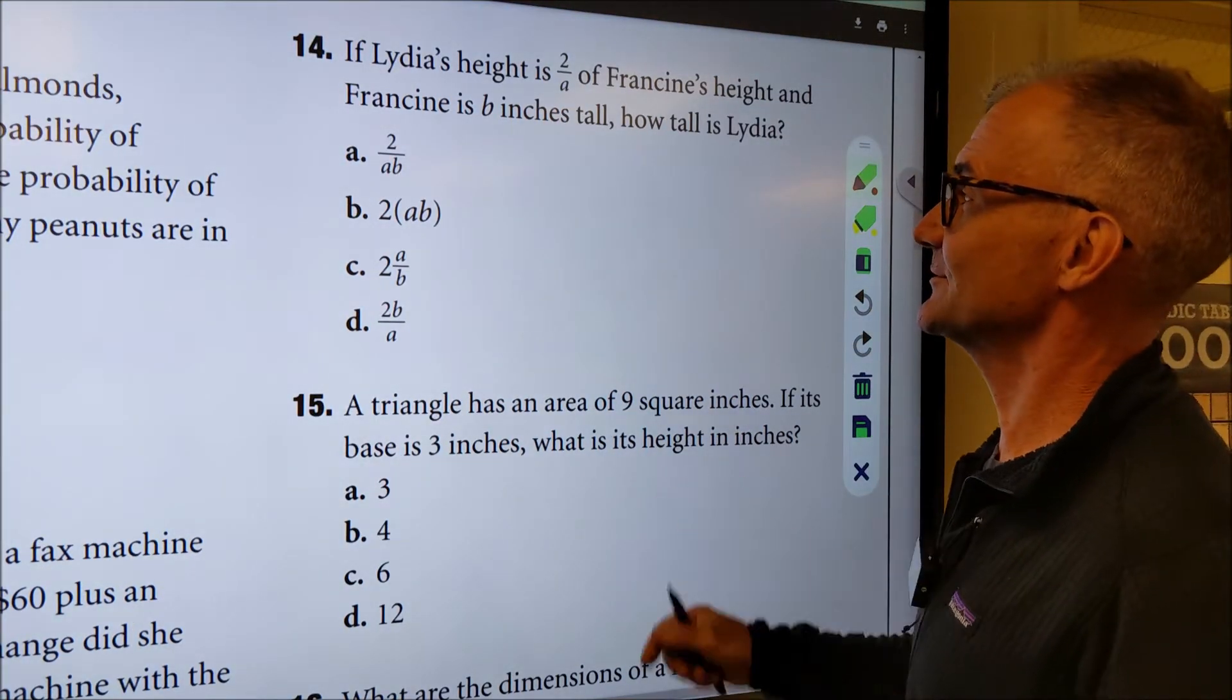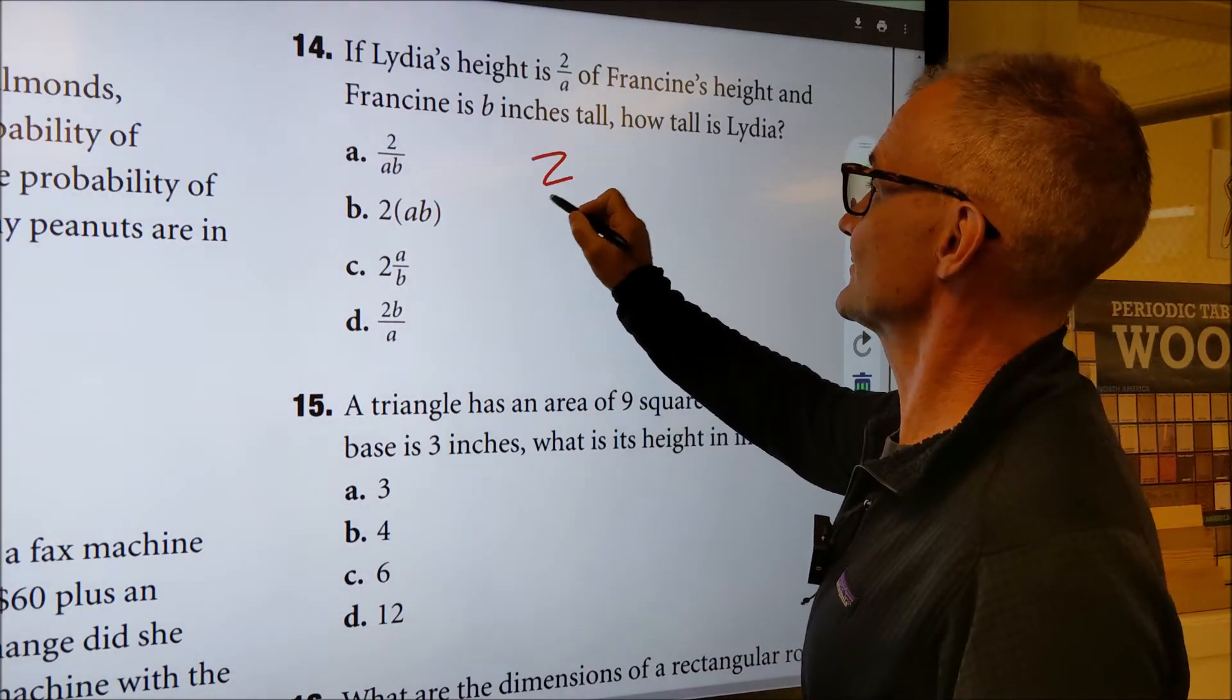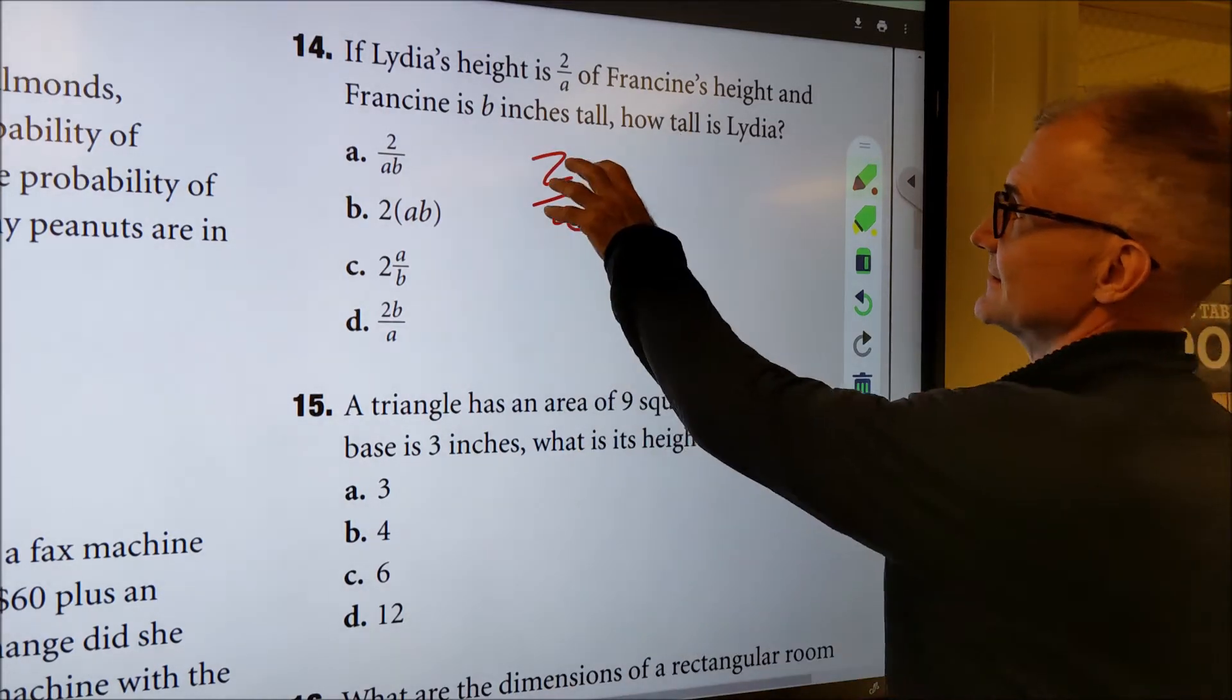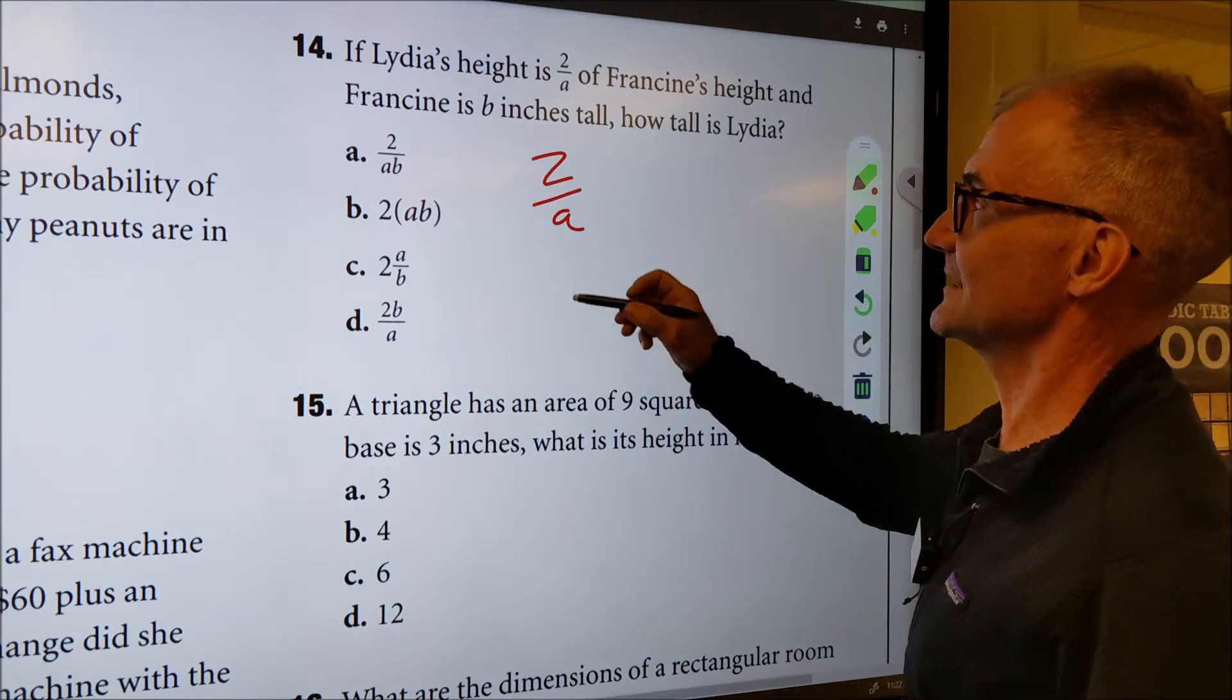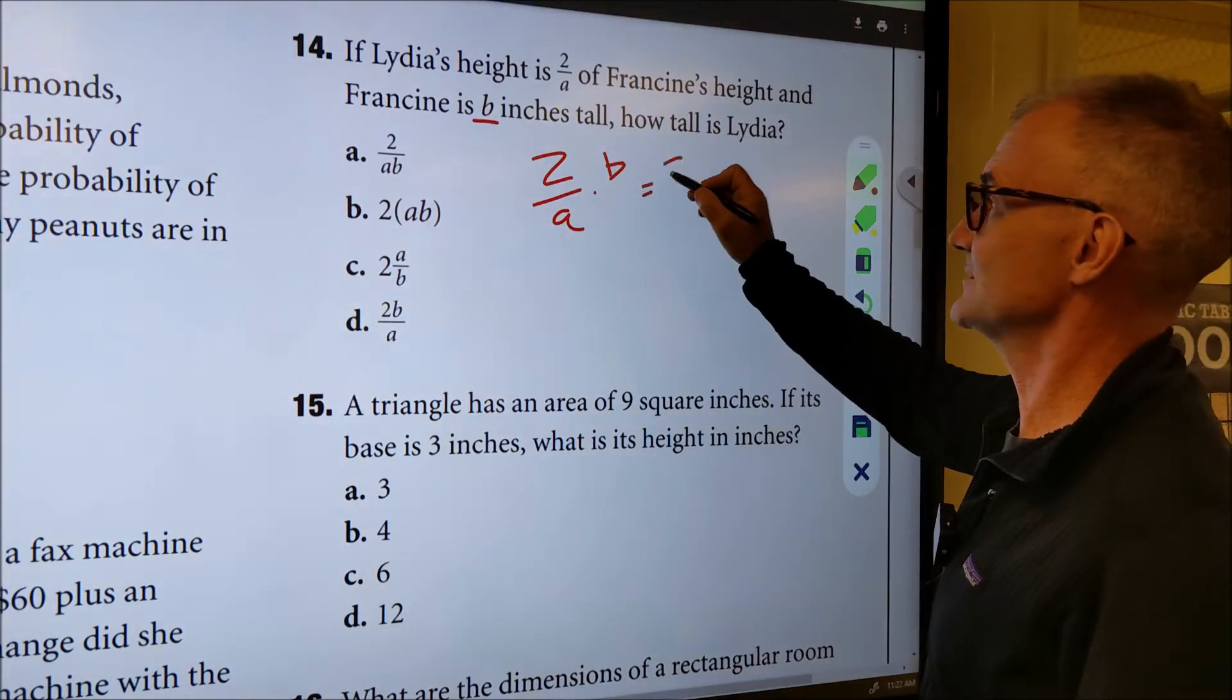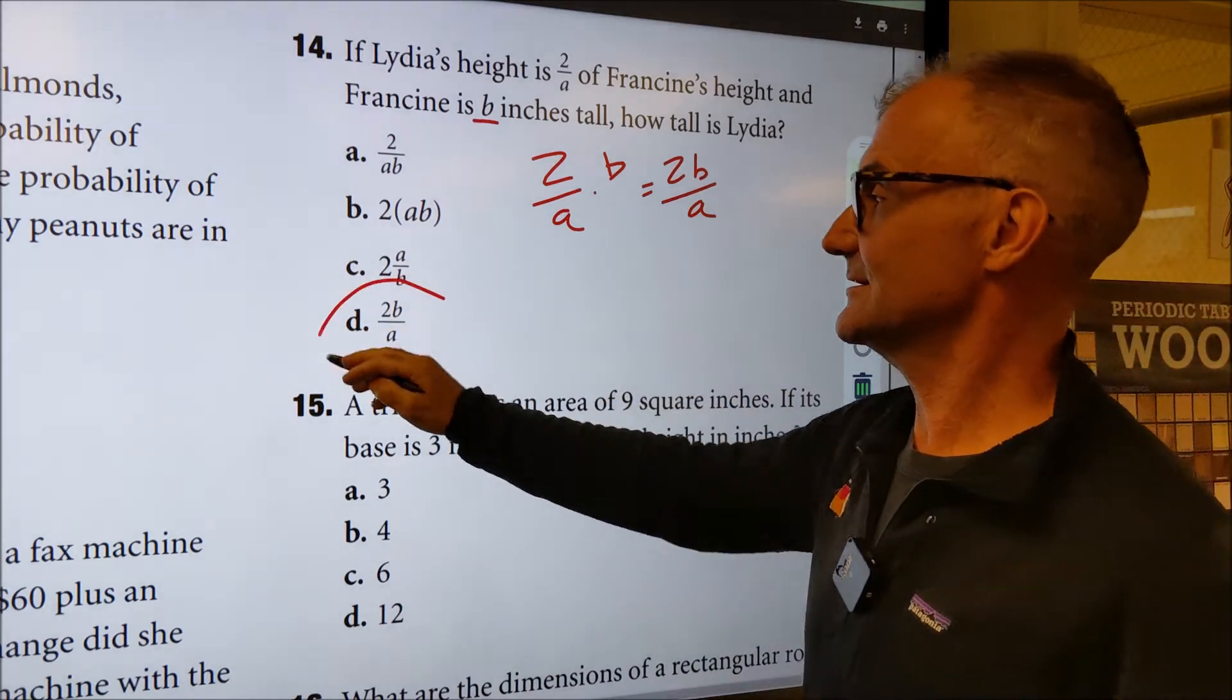Problem number 14. This is from chapter eight, introduction to algebra. Her height is two over a and Francine is b inches tall. So this is Lydia's height. Lydia's height is a proportion of Francine's height. Francine's height is b. So I just take this and multiply it by b. And then that just gives me two b over a, and there's my answer right there. Answer D.